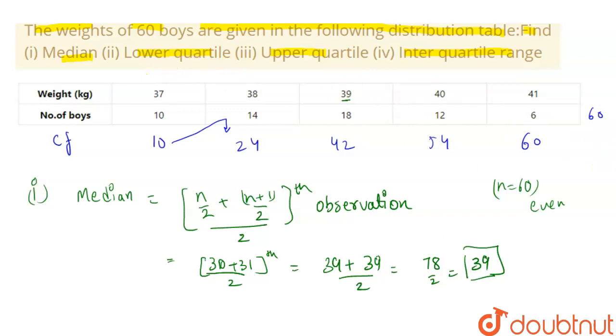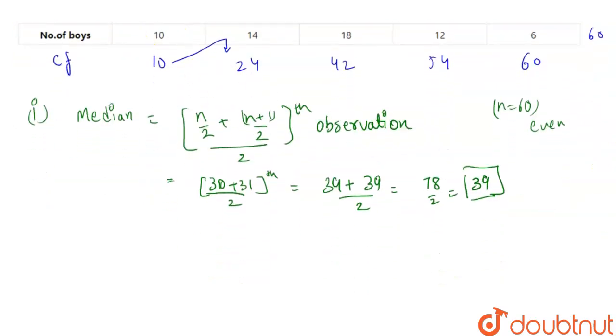Now the second part was lower quartile. Quartile means 1 by 4th of observation. Total observation is n, which is 1 by 4 of 60th observation.